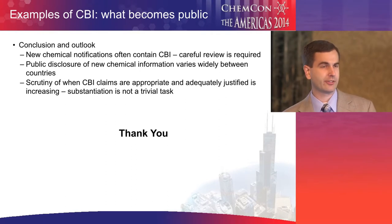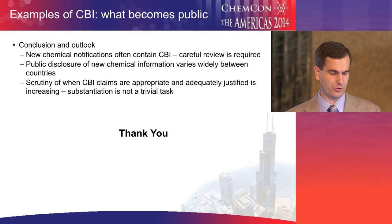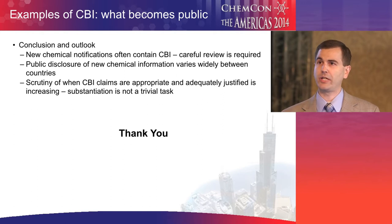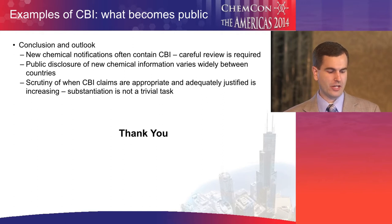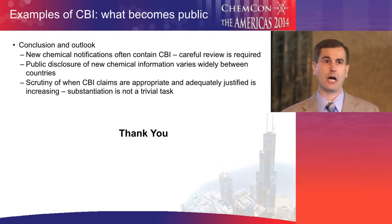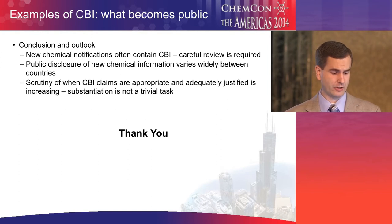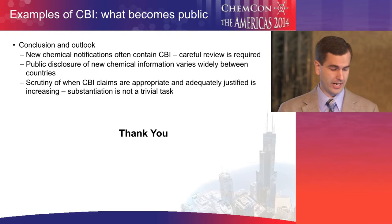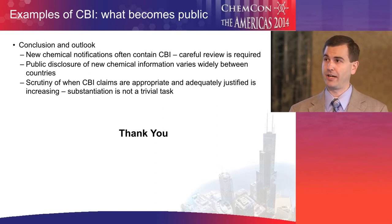In summary, confidential business information is often a part of new chemical notifications and requires careful review before you submit. You're not looking only at individual data elements within your notification, but you're looking at links between information and the clues that may offer to your competitors. Doing this on a global basis gets complicated because different countries have different requirements around CBI — in terms of what's eligible for protection, how you are required to justify your need for protection, how long you're protected, and how much you have to pay for it. And as we've seen for chemical identity in particular, the inventory status of your chemical can impact how it will be treated when notified in other countries.